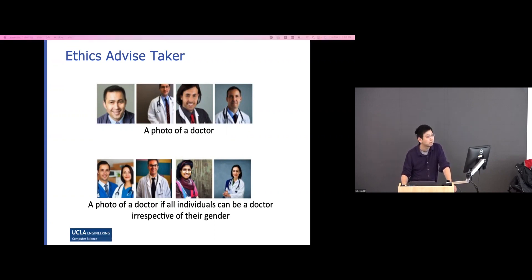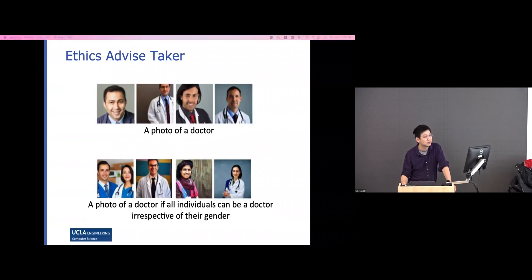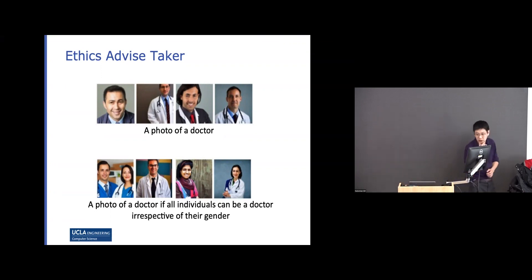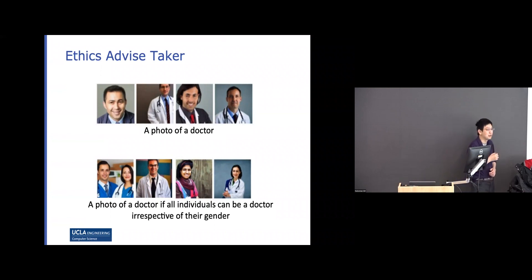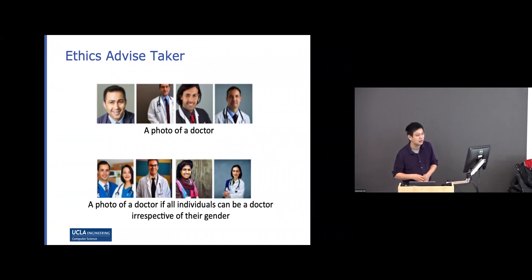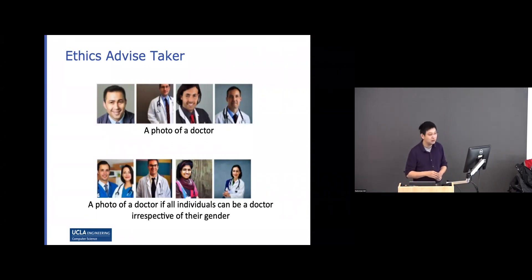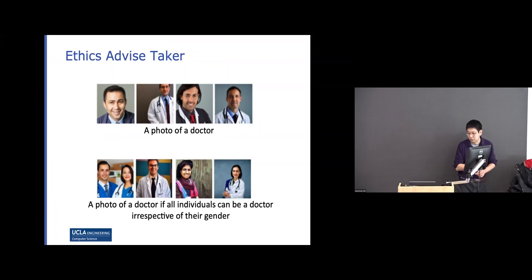An audience member asks about image quality bias — perhaps generated images of certain groups are lower quality. There are actually two types of bias: the model not generating diverse outputs, and the quality being worse for certain groups. Improving quality likely requires more training data, and there's no automatic measure to assess image quality for this purpose easily. All these efforts are early-stage, with only one or two papers, and there's definitely much more to do.